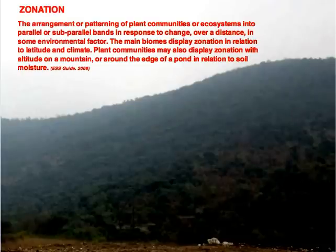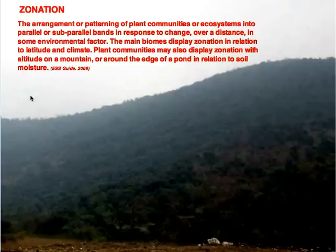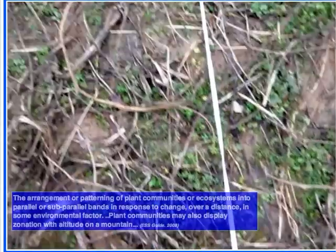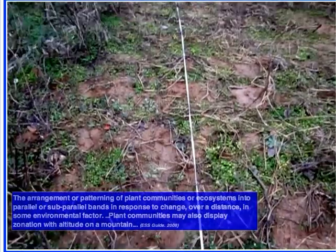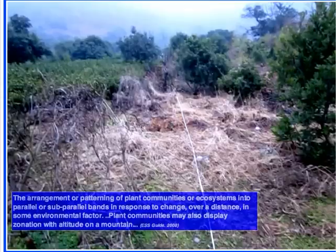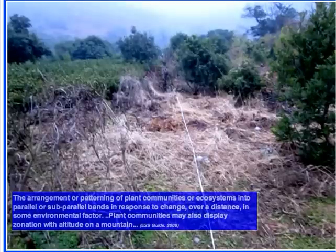It's important to establish the difference between succession and another term sometimes confused with it: zonation. Zonation is the arrangement or patterning of plant communities or ecosystems into parallel or subparallel bands in response to change over distance. Here we're using a transect — something we'll discuss in the next section — to study zonation on a mountainside, looking at everything that occurs as we traverse the length of the mountain from the bottom all the way up to the top.